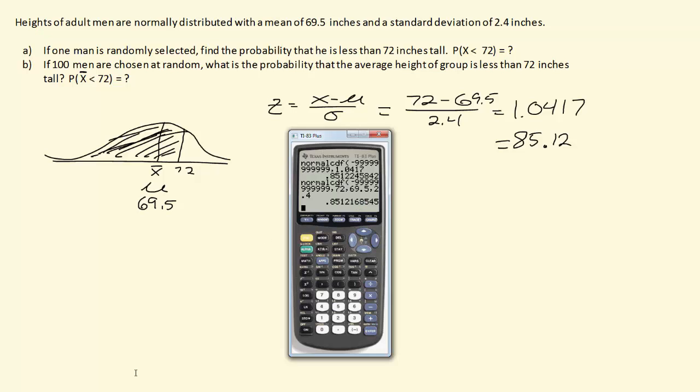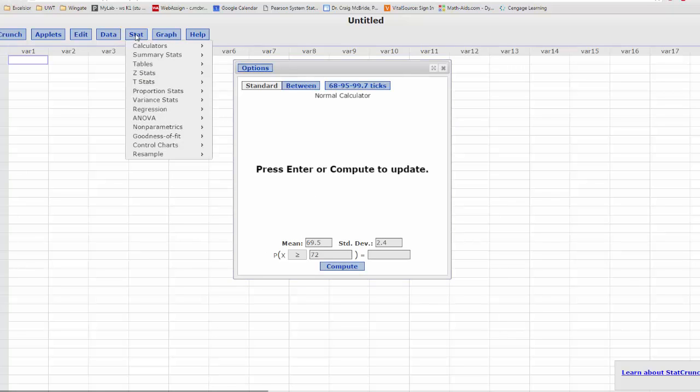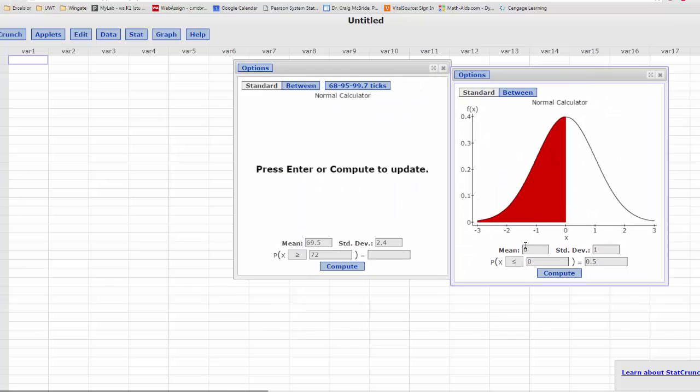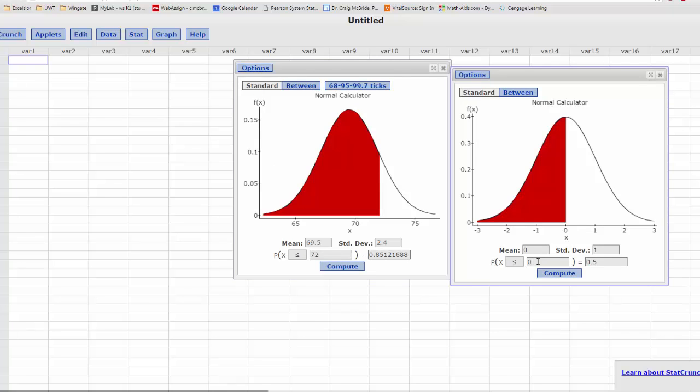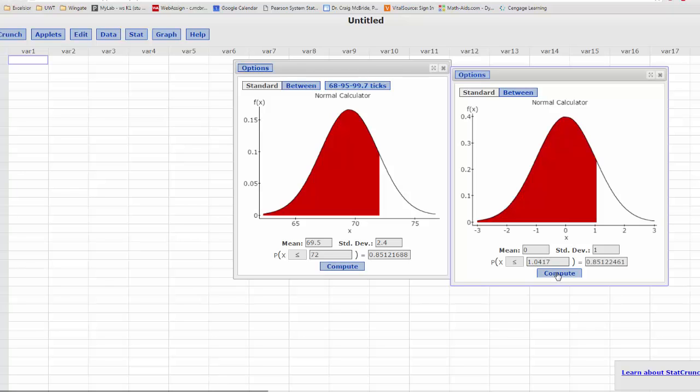Another way, if you have access to it, StatCrunch is a beautiful tool. Stat, Calculator's, Normal, and that brings up the normal calculator. If we wanted to do this we'd have to go what's the probability that they're less than, because we want to know what's the probability that they're less than a certain height. And our z-score remember was 1.0417, I think. But over here if we change the mean and standard deviation to the mean and standard deviation of our sample, then we can just use the raw score and do less than 72, and you see that we get basically the same number left and right. So two easy ways to do it in technology.